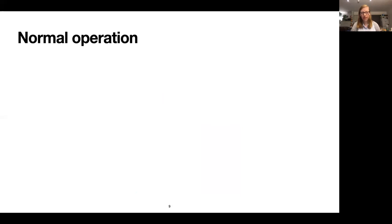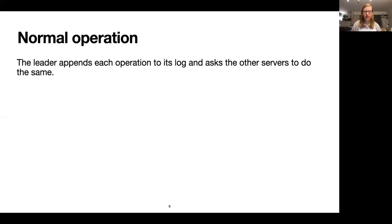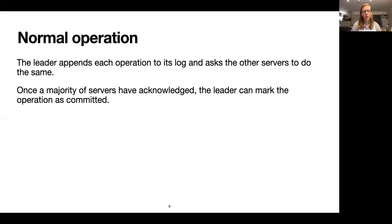In normal operations, when there aren't any failures, they have a stable leader and they're working productively. The leader will append operations to its log and ask the other servers in the system to do the same and wait back to hear from them. Once it's heard from a majority of servers, the leader will mark the entry as committed and could then apply it to the state machine.